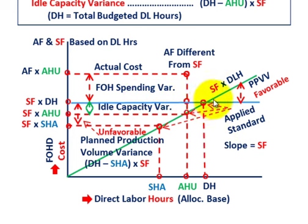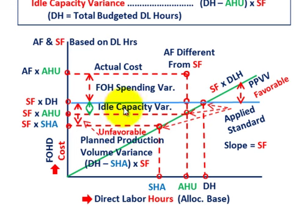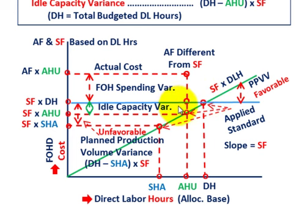The slope of this line is based on the standard fixed rate — it increases at the standard fixed rate. We're isolating our planned production volume variance — blue line versus standard hours allowed — and then we looked at idle capacity variance, which is the capacity that wasn't used. When we get past the inflection point where our applied standard is greater than our fixed amount, we wouldn't have any idle capacity variance. Until we reach that point, the difference between standard hours allowed and actual hours used is our idle capacity variance.